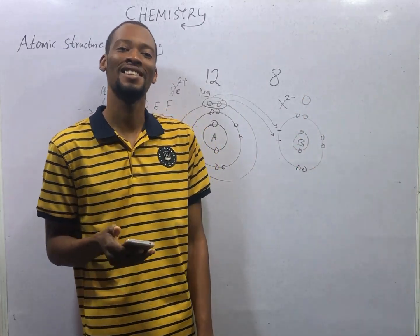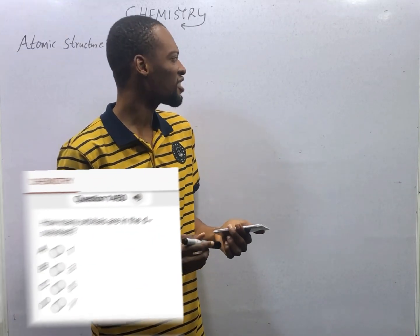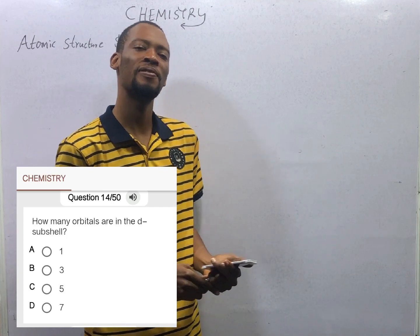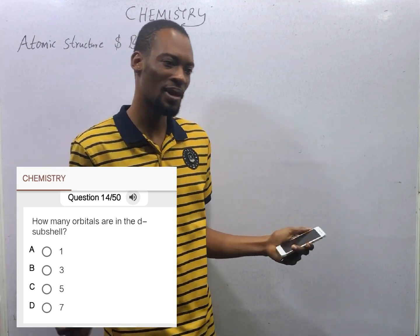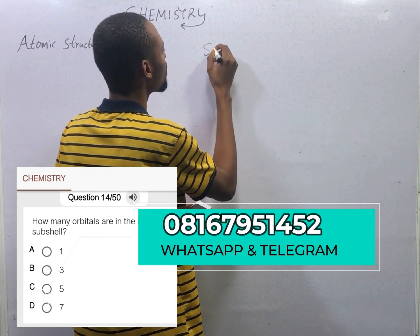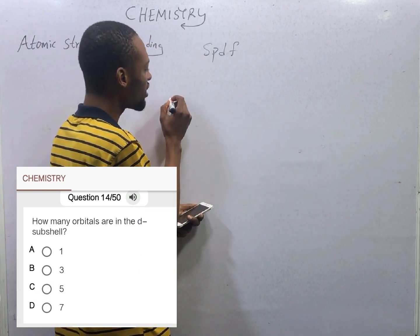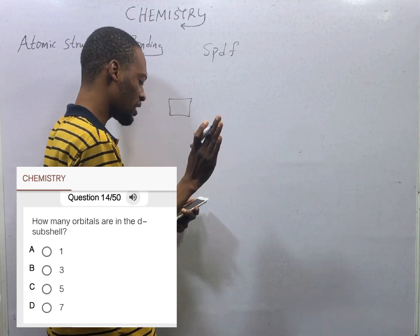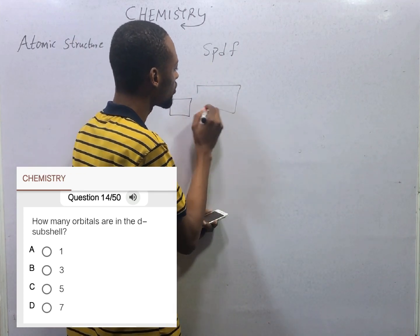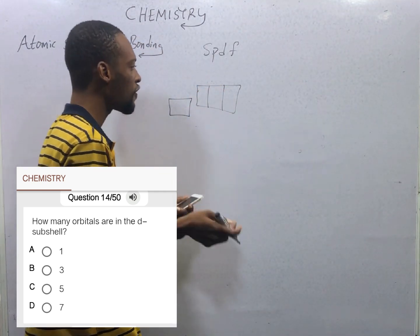How many orbitals are in the D sub-shell? We have the orbitals S, P, D, and F. In the S orbital, you have just 1 orbital. For P, you have 3 orbitals. For D, you have 5 orbitals.